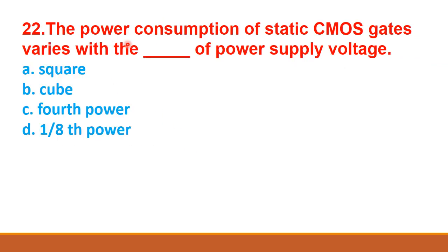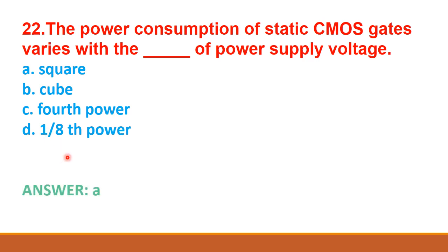Next question: the power consumption of static CMOS gates varies with the dash of power supply voltage — option A: square, option B: cube, option C: fourth power, option D: one by eighth power. The correct answer is option A: square.